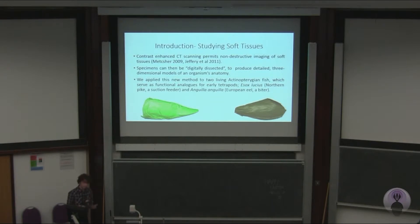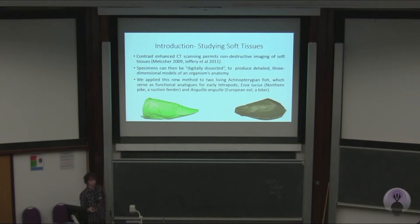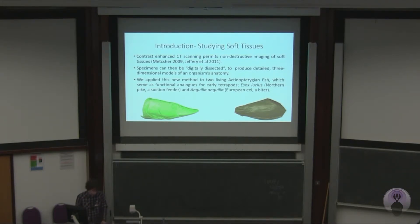One way you can get three-dimensional data is through contrast-enhanced CT scanning. We applied this method to two living fish: Esox lucius, the northern pike, which is a suction feeder, and Anguilla anguilla, the European eel, which is a biter. These served as functional analogs for early tetrapods, and we decided to compare the soft tissue anatomy between these two taxa to get a better handle on what early tetrapods might be doing.